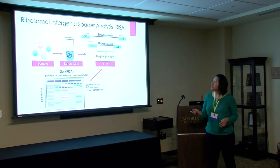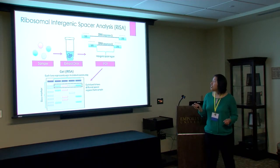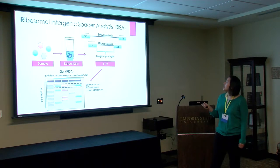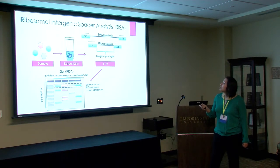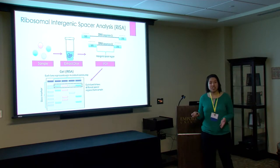After obtaining the DNA, we amplified it using PCR of the ribosomal RNA region between the 16S and 23S region. This region is called the intergenic spacer region and it's different in every organism — the length will be different. So when we run a gel, the size of every band tells us it's a different organism.